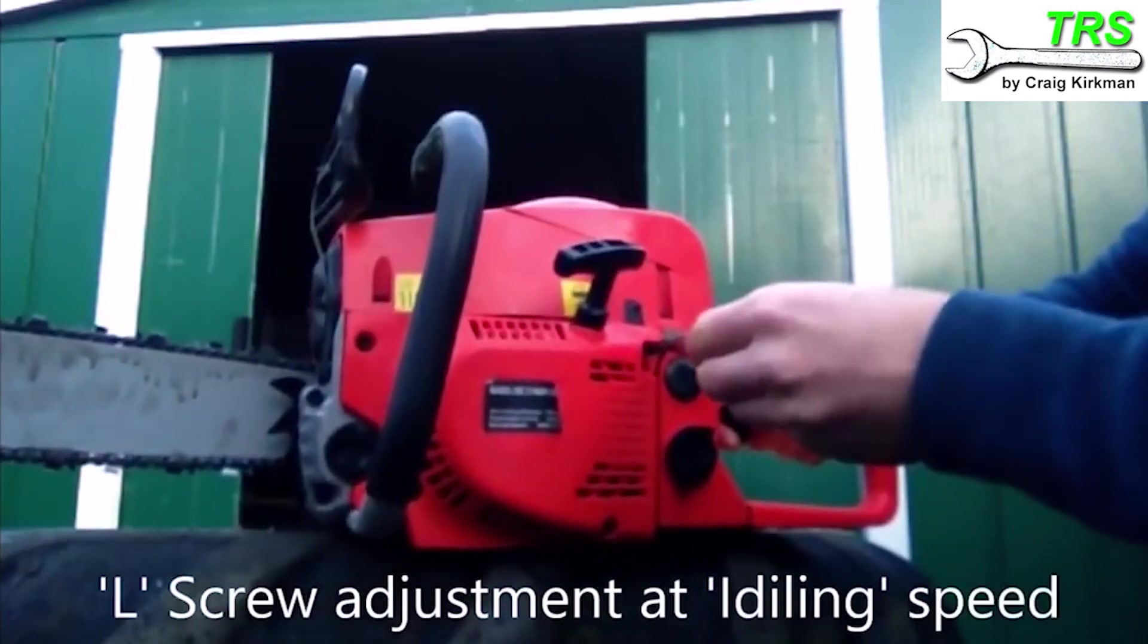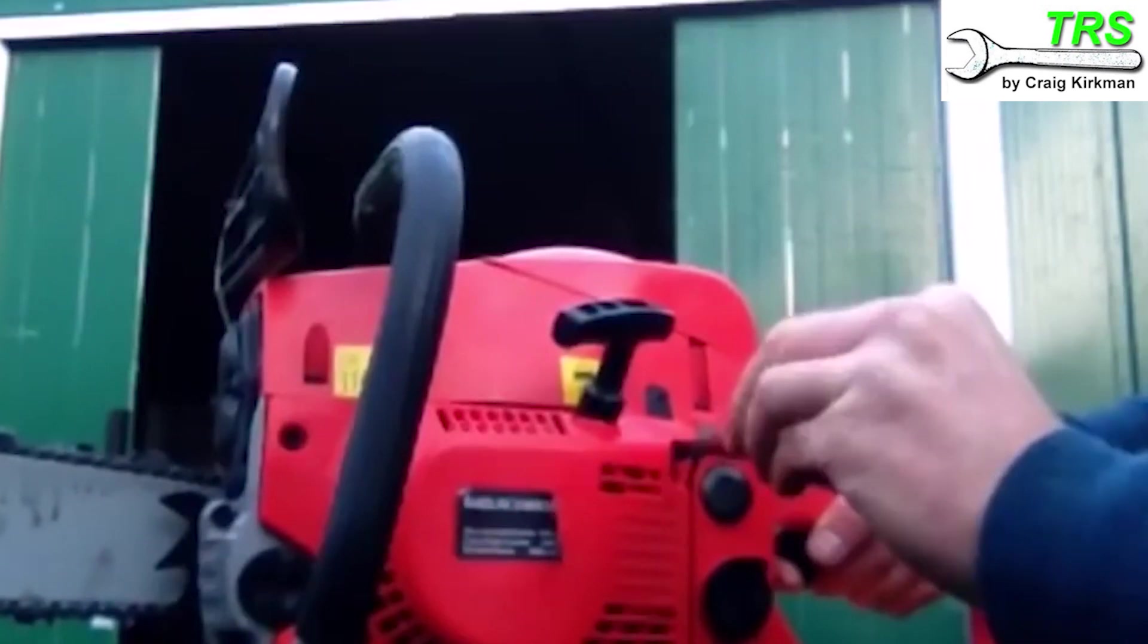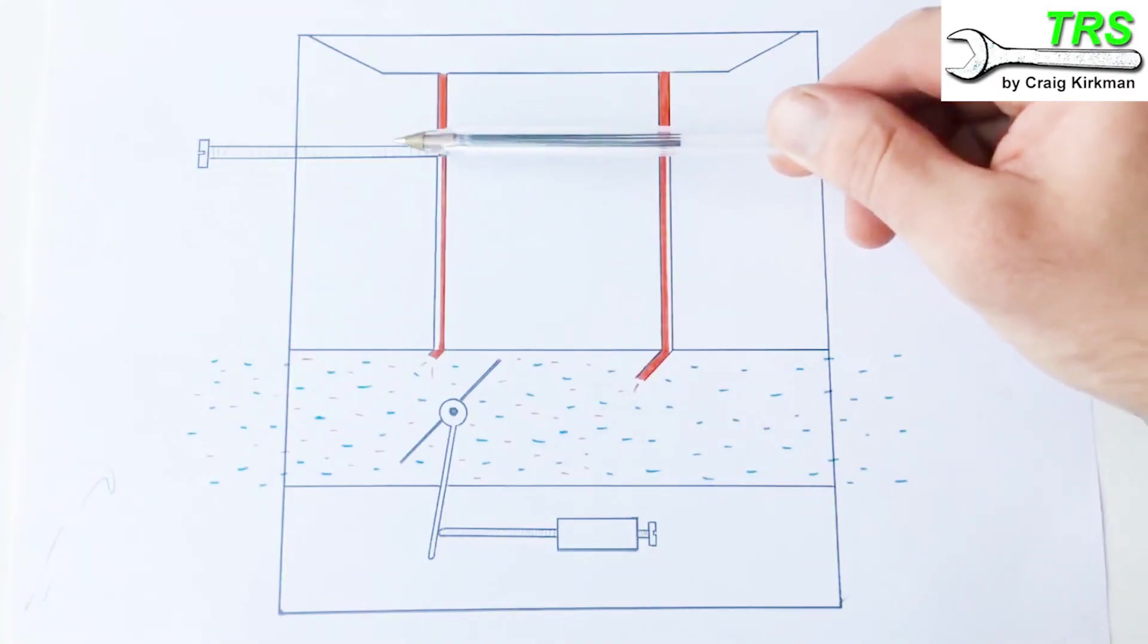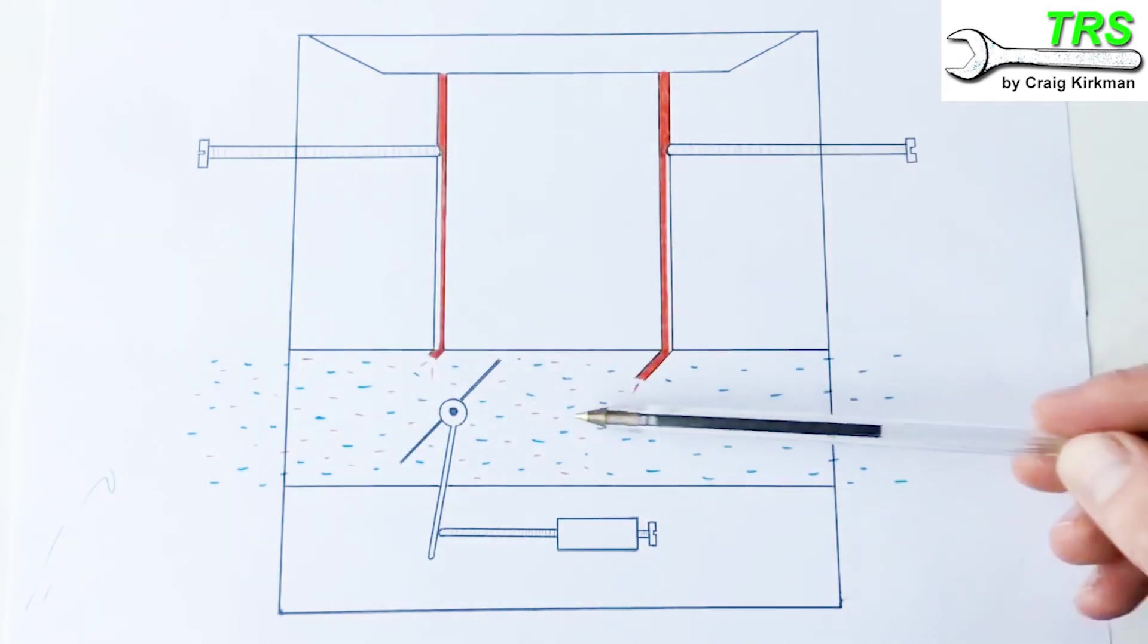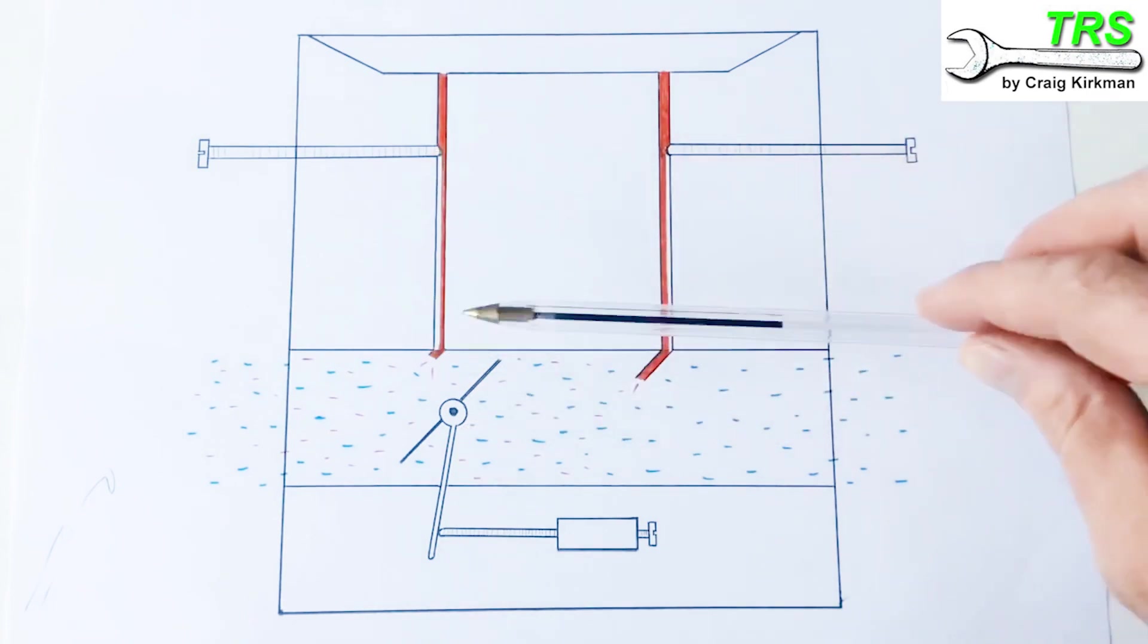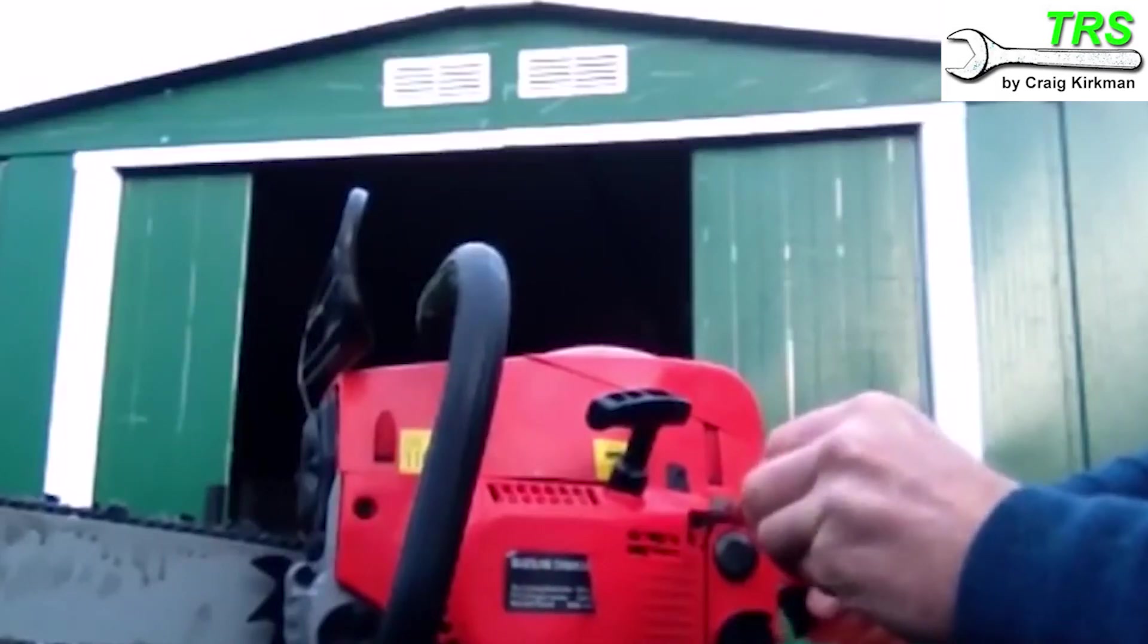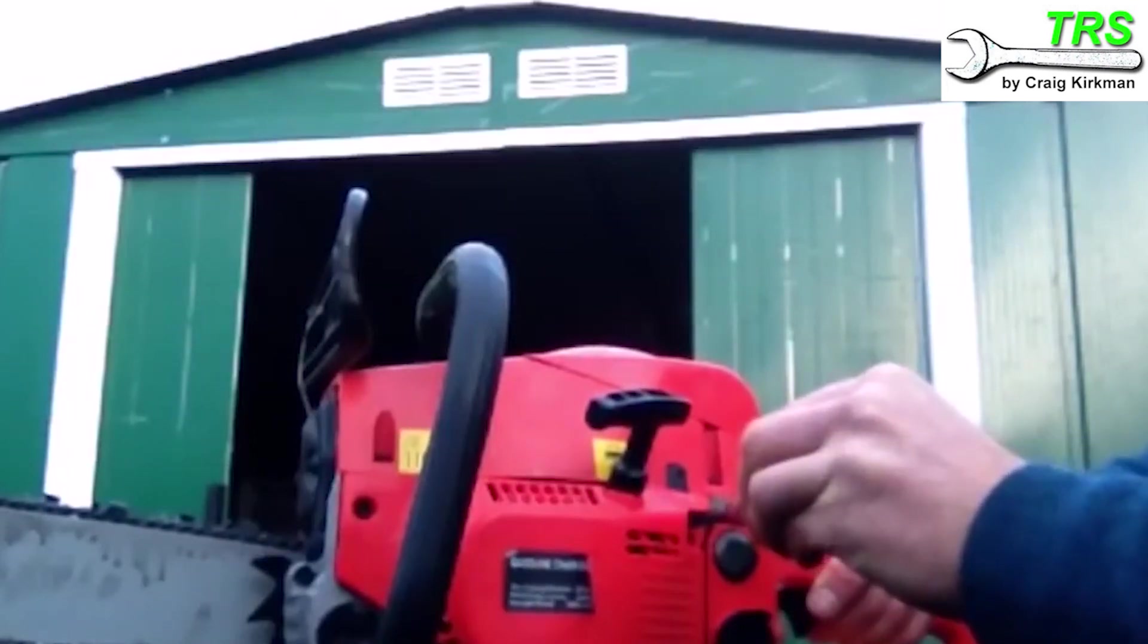Now the screwdriver is adjusting the L adjustment screw. When I turn it inwards, we can see the engine revs raise. If we screw this in to make it a little leaner, we'd get less fuel going in than air, so it would be a weaker mix and a lot leaner. So the idling revs raise slightly. We need to do the same as last time, pull back slightly just from that over-revving.